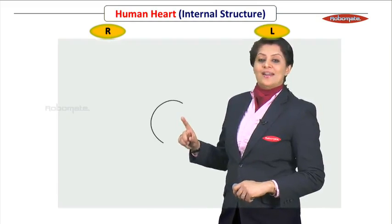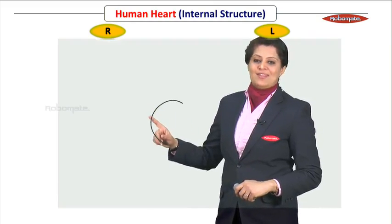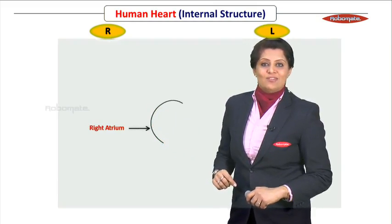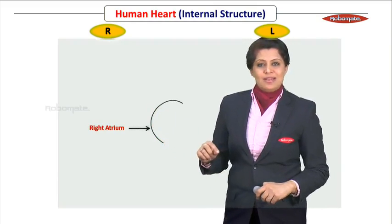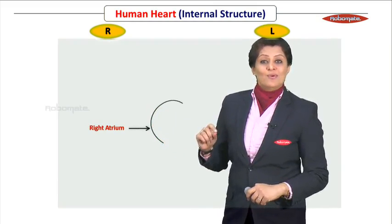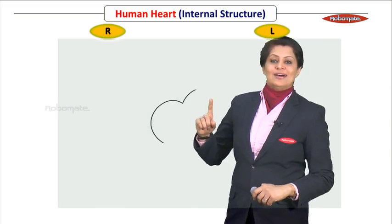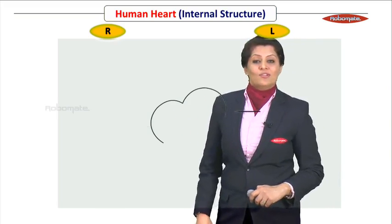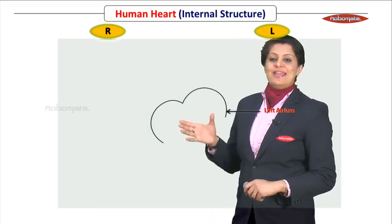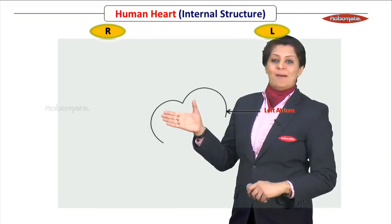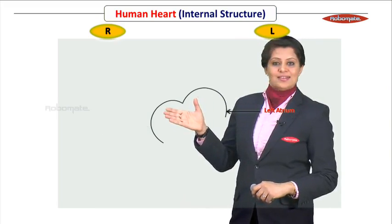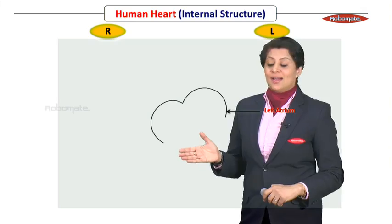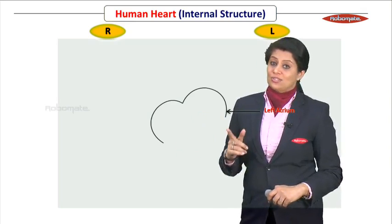Let's start drawing our diagram by first drawing the upper chambers. The right atrium — so first draw the right atrium. Similarly, a beautiful curve for the left atrium also. Now this completes the upper two chambers of the heart.